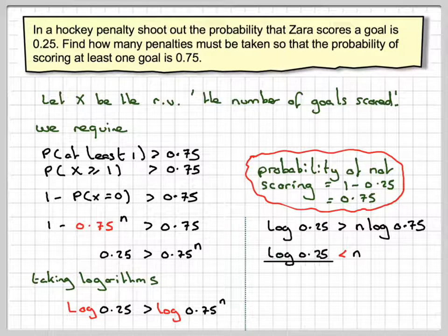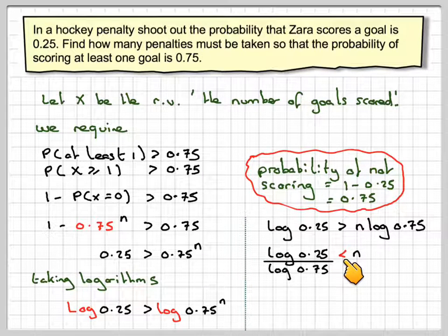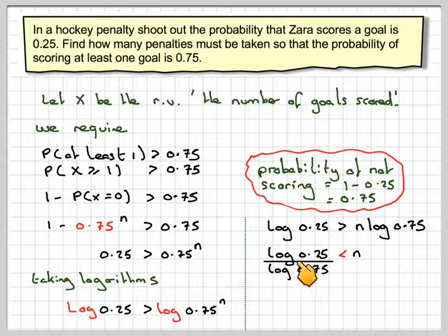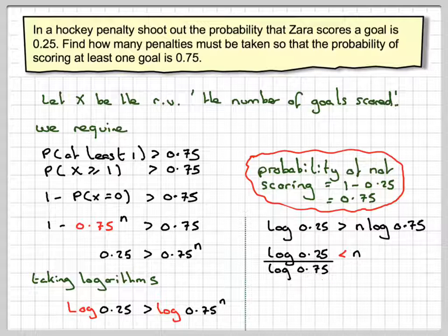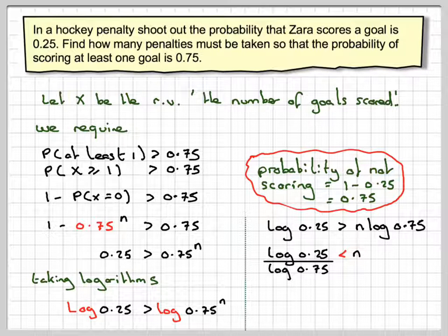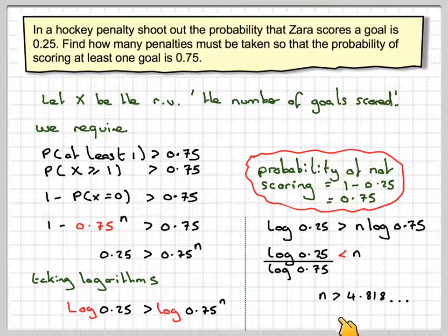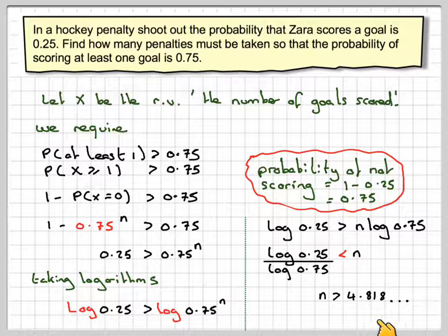Now this is negative, so if it's negative, when we divide by a negative, we need to reverse the inequality sign. So we have that n must be bigger than log of 0.25 divided by log of 0.75, and therefore n must be greater than 4.818.